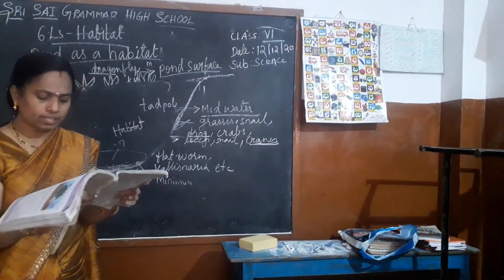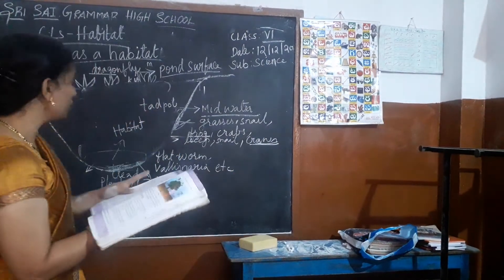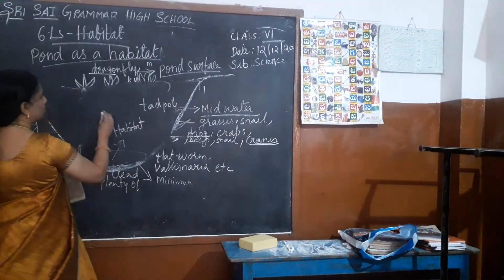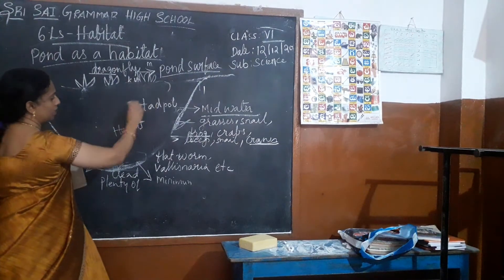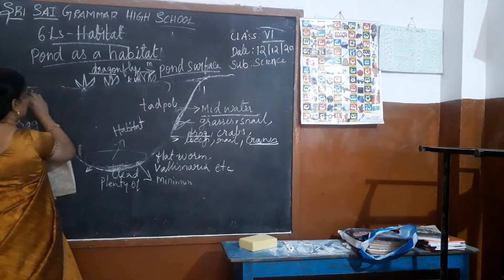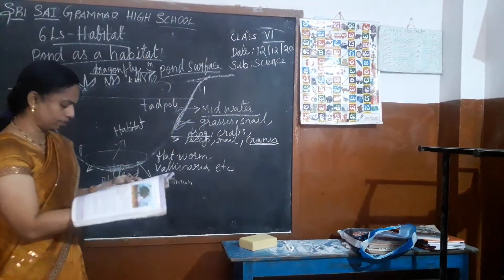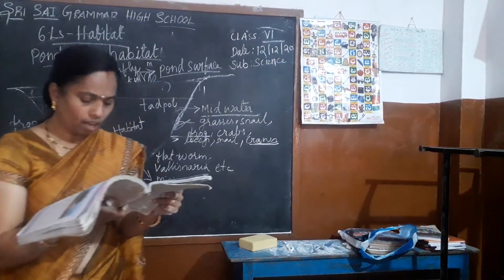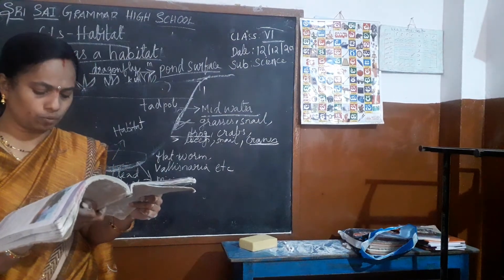What are the animals that share the surface of the pond as a habitat? Most animals will share the pond surface. Most animals can live on the surface. Are the leaves of plants growing in the pond similar? What is the difference between the leaves of plants growing at the bottom and those higher up?